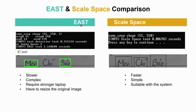Comparing EAST and scale space for text detection: at first glance, EAST gives wrong results — it can only extract two out of three words, while scale space is correct. EAST is a deep learning technique, so it's more computationally complex and requires a stronger laptop; my laptop cannot run EAST in real time. Scale space is more suitable for this system. Additionally, EAST requires resizing the original image to multiples of 32, for example resizing from 550 to 64×576. So for this project, I use the scale space technique.